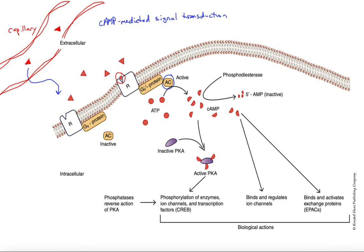We're going to be working with the GS protein here. Upon receptor binding, we activate that GS protein, which then stimulates adenylate cyclase to become active. That enzyme then processes its substrate, ATP — shown by the red circles here — to produce cyclic AMP, the second messenger molecule shown by the half circles. Cyclic AMP is an intracellular signal that helps mediate the response to this hydrophilic hormone that couldn't actually enter the cell to stimulate a response itself.